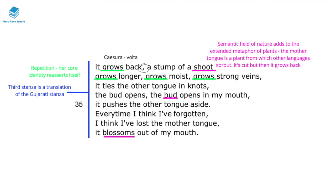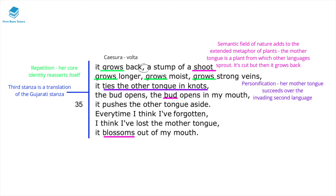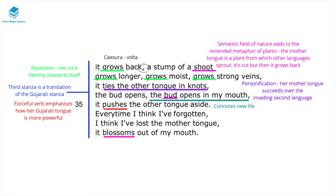There is a semantic field of nature, with references to 'shoot,' 'bud,' and 'blossoms,' creating an extended metaphor where the mother tongue is like a plant from which other languages sprout — even if cut back, it grows again, showing the power of her mother tongue and culture. The personification that it 'ties the other tongue in knots' shows the mother tongue succeeding over the invading second language. The phrase 'the bud opens in my mouth' connotes new life and rejuvenation, while 'pushes the other tongue aside' emphasizes the Gujarati language's dominance over her adoptive English.